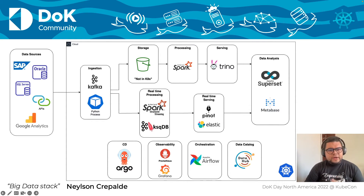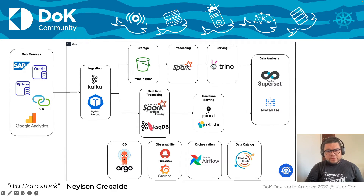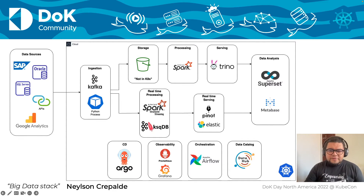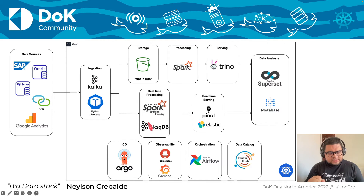The first part of our architecture is the ingestion layer. We mainly use Kafka — we rely on Kafka especially to migrate data with Kafka Connect from relational databases to our data lake structure, which is very efficient. Sometimes, when we have to deal with sources other than relational databases, we develop customized producers for Kafka, or customized Python processes, and those Python processes run on top of Kubernetes, essentially in pods.